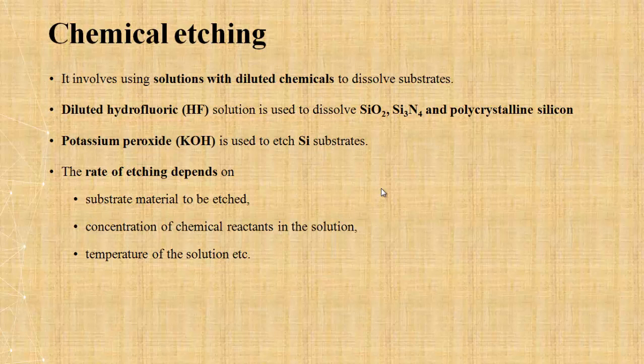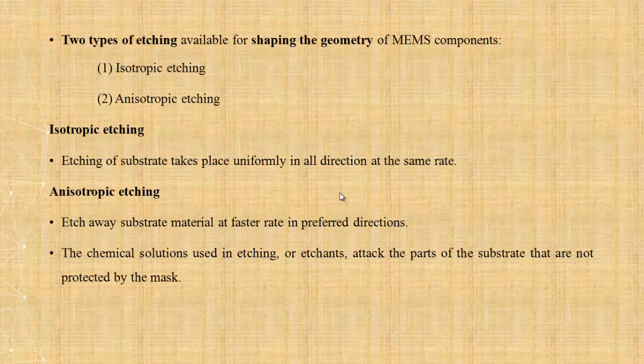The rate of etching depends on the substrate material to be etched, the concentration of chemical reactants in the solution, and the temperature of the solution. In general, etching can be classified as: first, isotropic etching, and second, anisotropic etching.